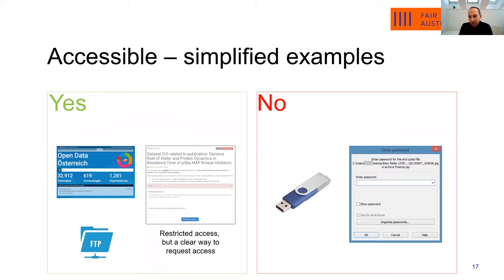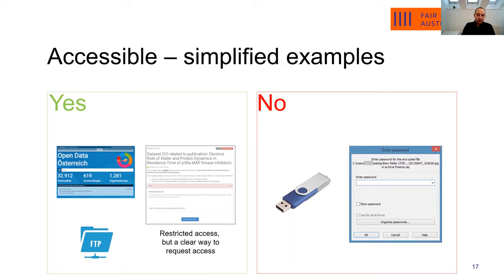However, if we talk about accessibility — whether you can access the data or not — an FTP server or your personal website makes things accessible, because once you know where the data is and you go to that website, you can download it and the conditions for downloading are clear. So if it's publicly available and everyone who has the link can get it, yes it's accessible — but you're failing at findability.